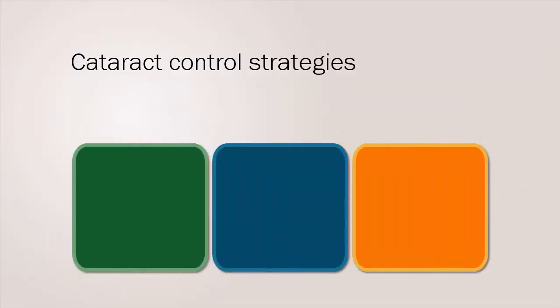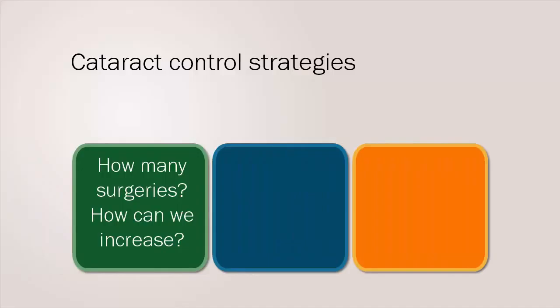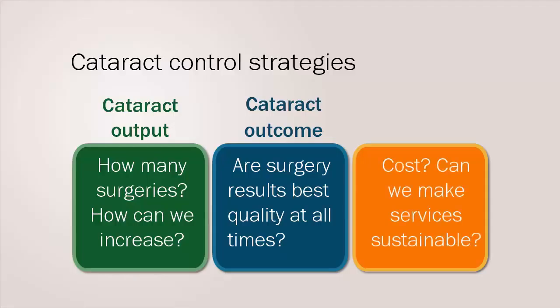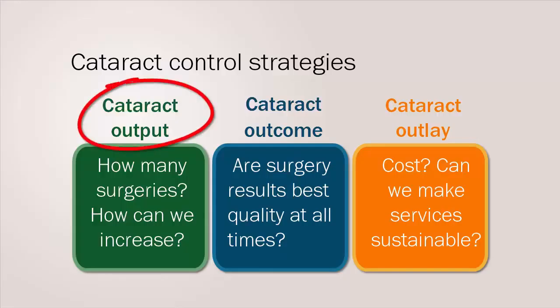Cataract control strategies examine service delivery from three key positions. How many surgeries are we doing and how can we increase this number? This is known as the cataract output. What are the results from the surgery and is it the best quality at all times? This is known as cataract outcome. And finally, what is the cost of our cataract surgery and how can we make eye care services sustainable? This is known as the cataract outlay. In this presentation we will be focusing on understanding the factors that influence cataract output.